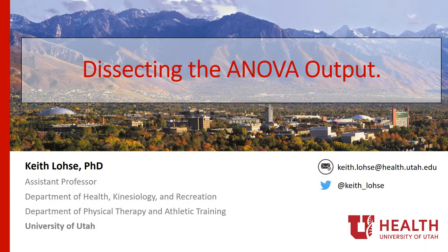Hi everyone, welcome to the fourth and final video for module 8, where we're talking about models with a single categorical predictor. In the last video we talked about situations where we have more than two groups and we walked through how we could treatment code or contrast code those variables, and ultimately we get a similar omnibus F but we get different coefficients.